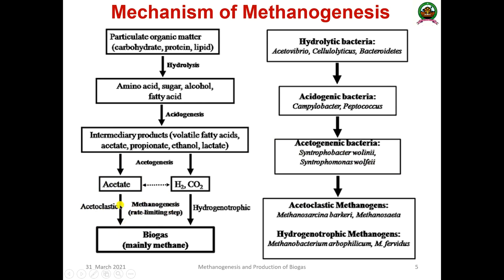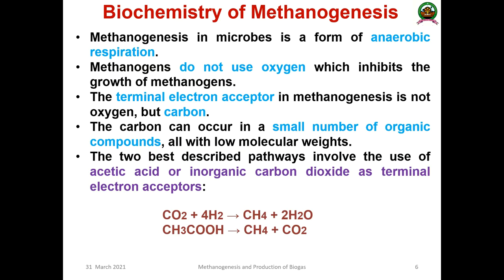Acetate is converted by aceticlastic bacteria into biogas — that is, methane and carbon dioxide. Carbon dioxide and hydrogen are converted by hydrogenotrophic bacteria into methane. This process is methanogenesis. The major aceticlastic methanogenic bacteria are Methanosarcina barkeri and Methanosaeta. Acetoorgatotrophic methanogens include Methanobacterium arbophilicum and Methanobacterium fervidus, which are the major types of hydrogenotrophic methanogens.